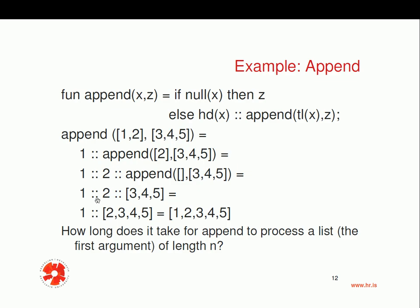So we get `1 :: (2 :: [3,4,5])`. How is that computed? We cons 2 and the list `[3,4,5]` to get the list `[2,3,4,5]`, and then we cons 1 to that result to get the final list `[1,2,3,4,5]`. Basically, what append is doing is traversing the first list until it's empty, consing each individual element of that first list. And once the first list is empty, it returns the second list.